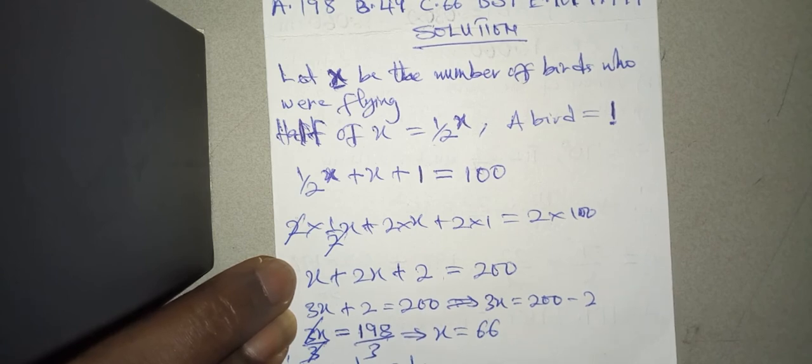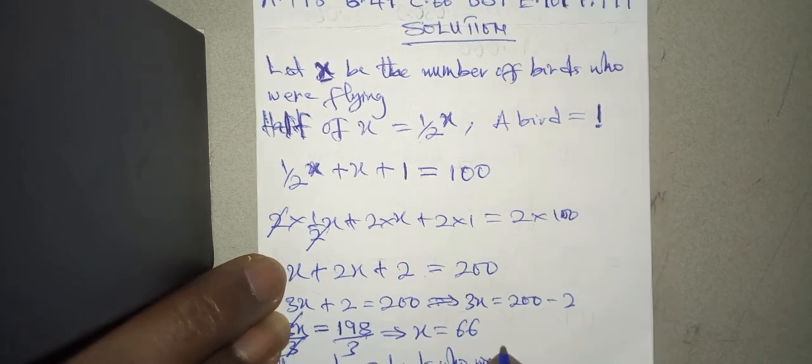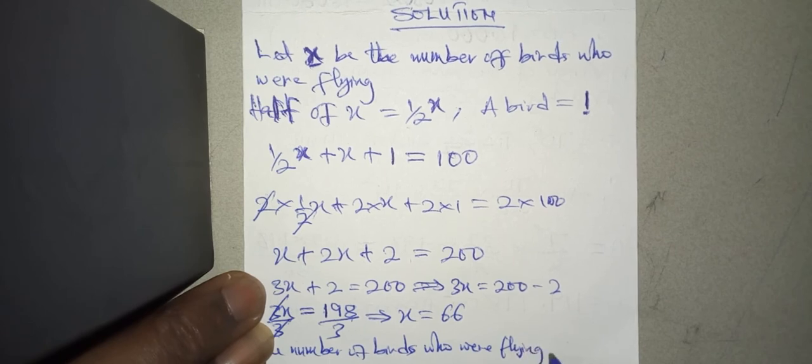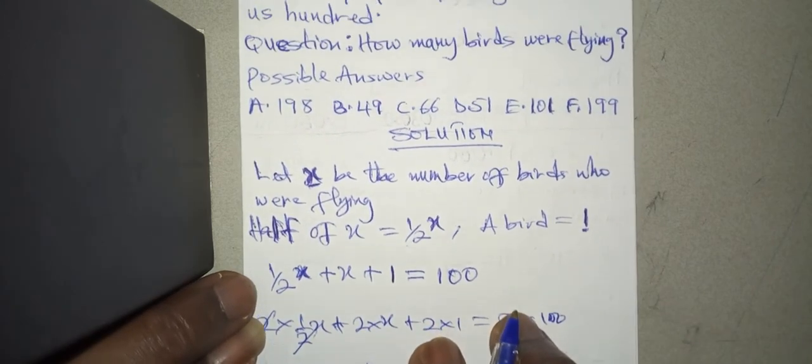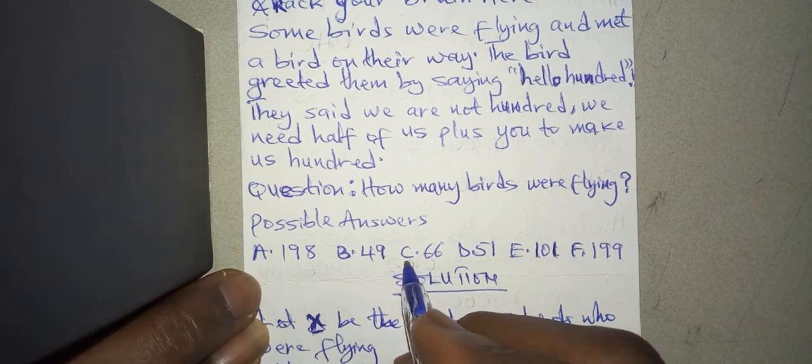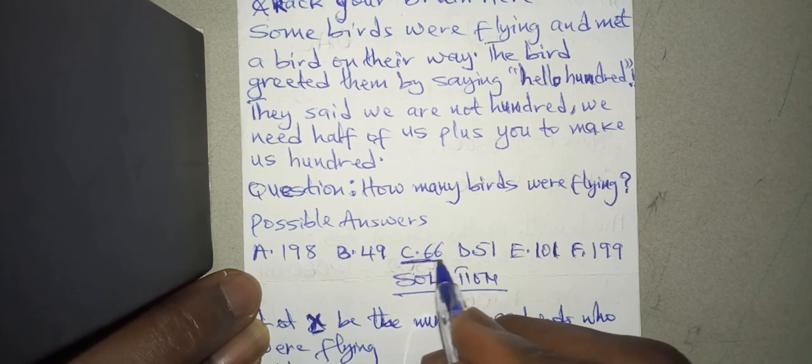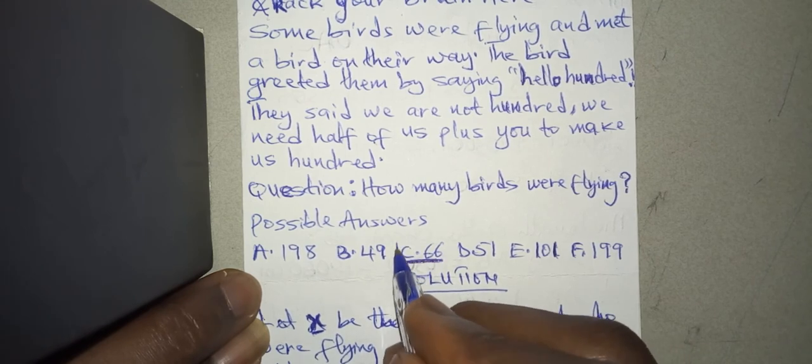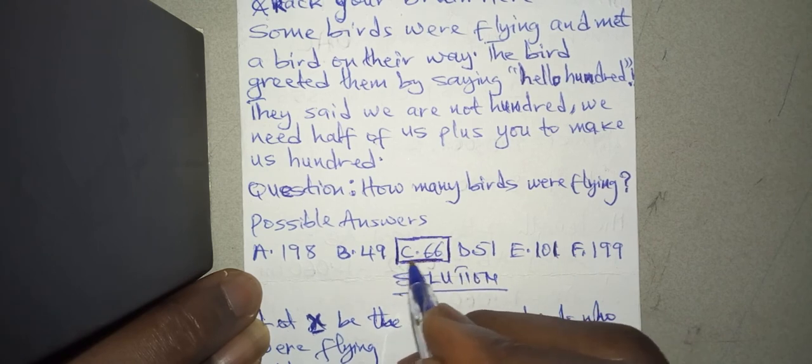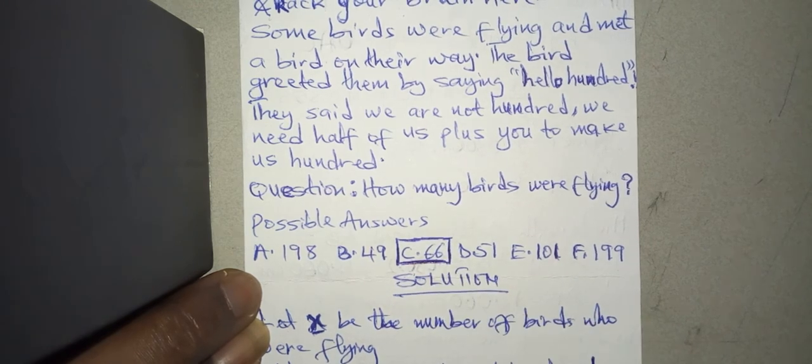So I'll put here that therefore the number of birds who were flying is x equals 66. So let's go back to our possible answers whether we have 66 there. All right, so we have 66 for C. Therefore I will choose C as my correct answer among the rest. All right, so this is it.